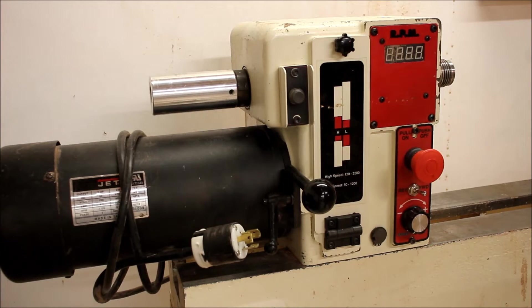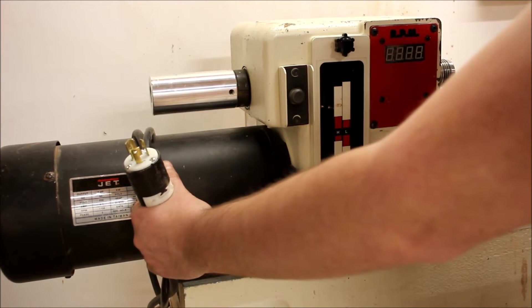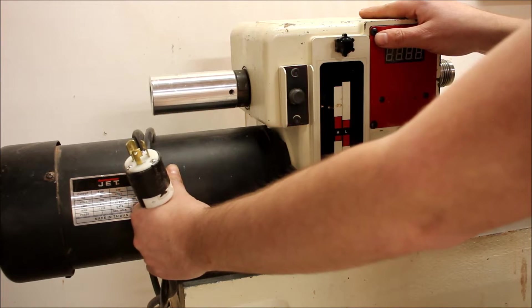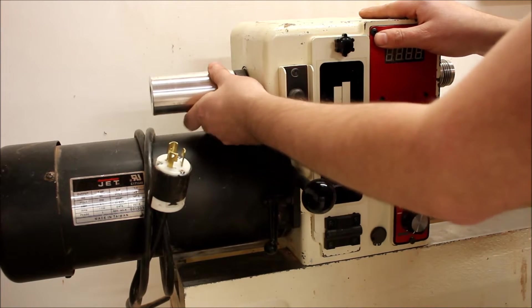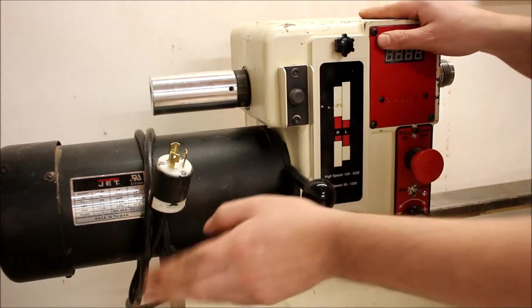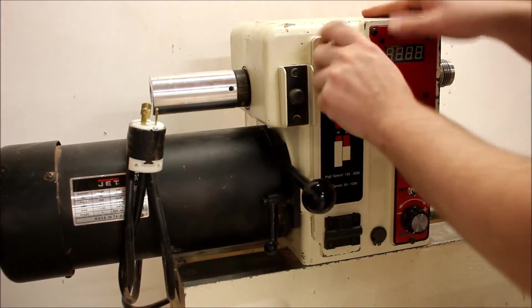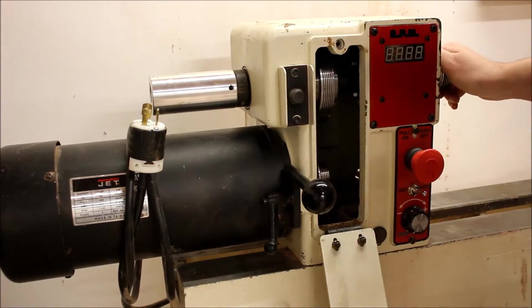Before we get started here it's very important we make sure our lathe is unplugged. We don't want any power going to it - there's electrical components in here, we don't want to get electrocuted, and also we don't want it to somehow turn on while we're touching any of these moving parts on the inside. So we're unplugged here and we'll go ahead and start gaining access to the internal components and we'll remove this spindle.